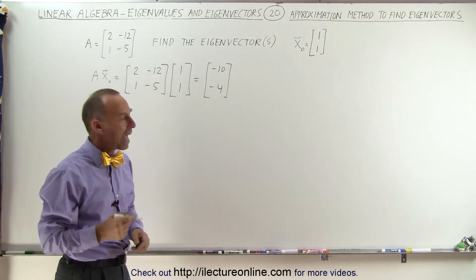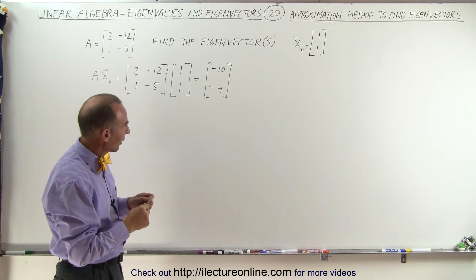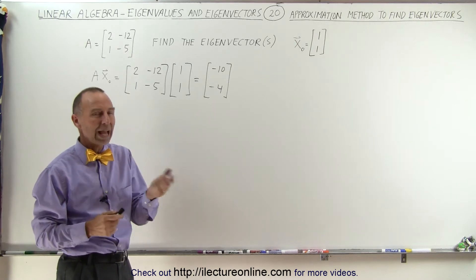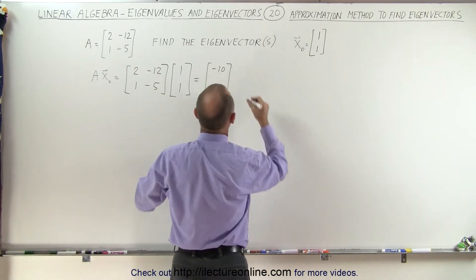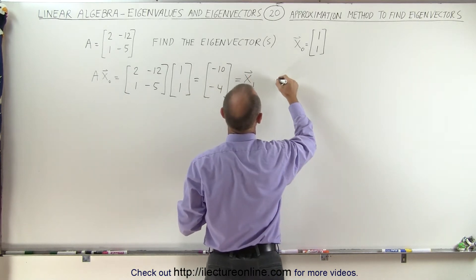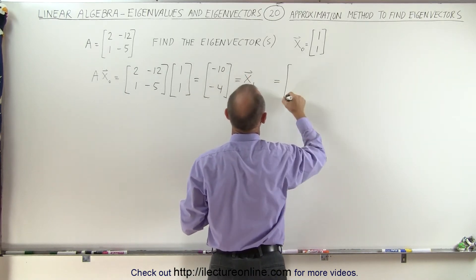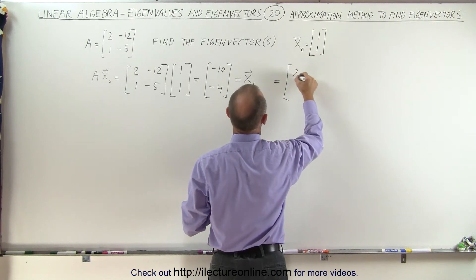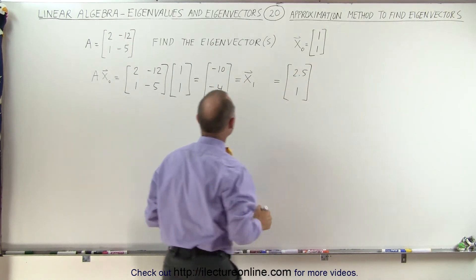Notice that is a 2 and a half to 1 ratio, right? 10 divided by 4 is 2 and a half to 1. So this is called the x sub 1 vector and this is equal to a ratio of 2.5 to 1.